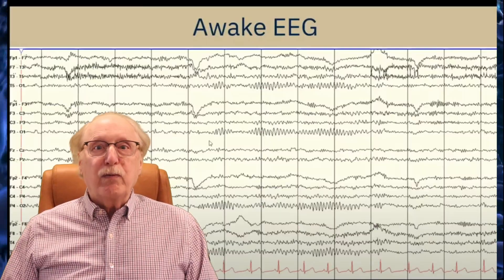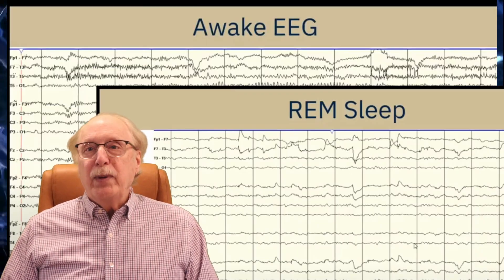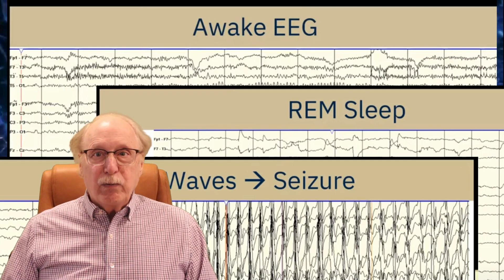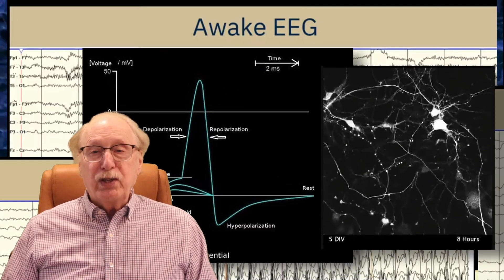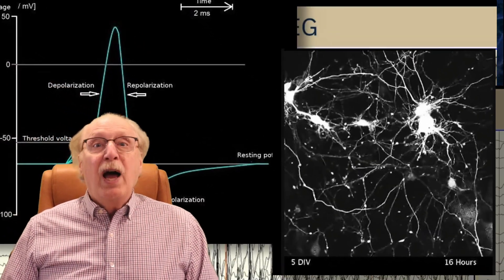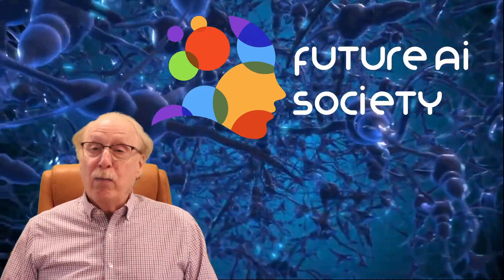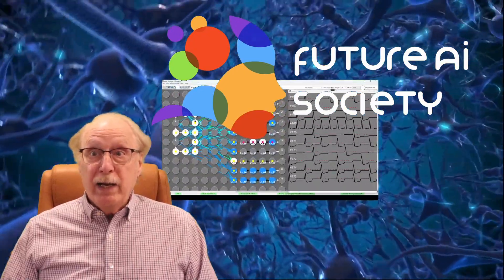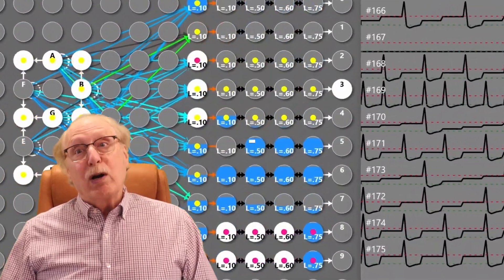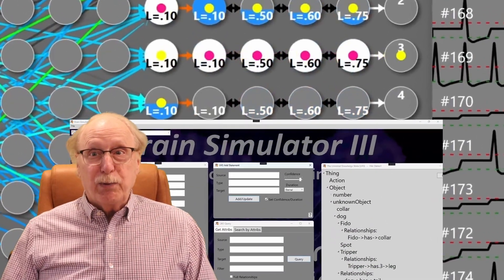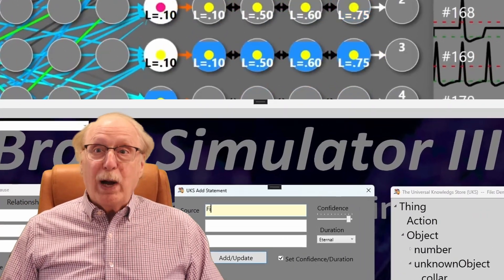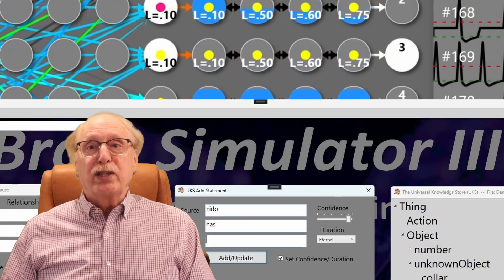I'm Charles Simon, long-time AI researcher, software developer, and manager. Beyond AI, I've developed software for neurological test instruments and neural simulators. I created the Future AI Society to explore how neuroscience can inform smarter, more human-like AI. A lot of effort has gone into our open source brain simulator projects, which I'll be using throughout this series for simulations and demonstrations.